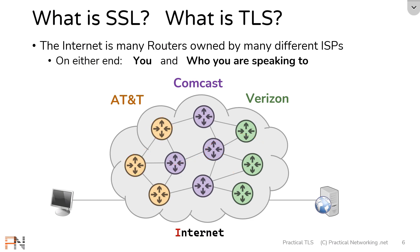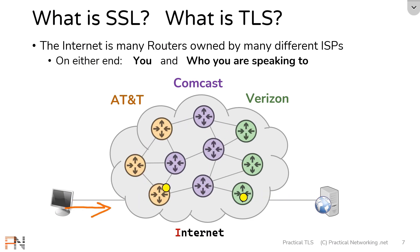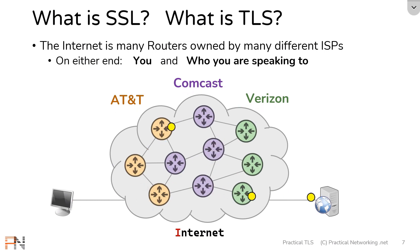So when you are trying to speak to something on the other side of the internet, you are putting data on the wire which is then going to be handed off from router to router, owned by different ISPs, all the way across the internet before it arrives to the other side. As soon as you put data on the wire you no longer have control over what happens to that data — it is literally in the hands of all these different ISPs as it's passing across the internet.